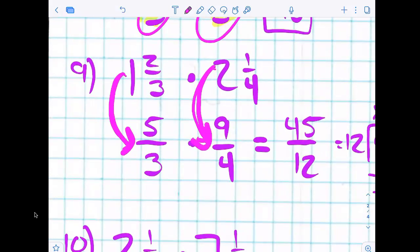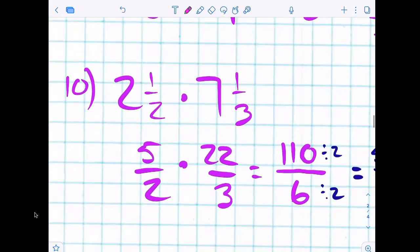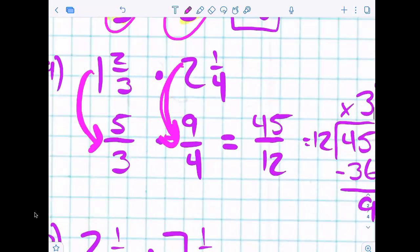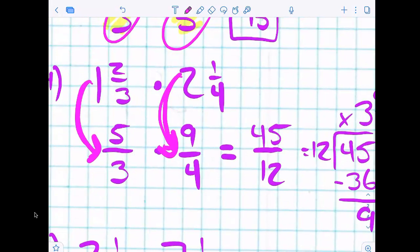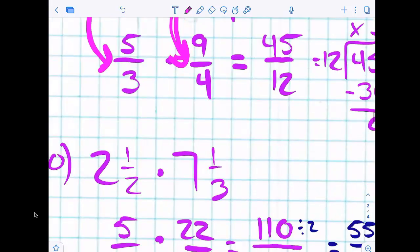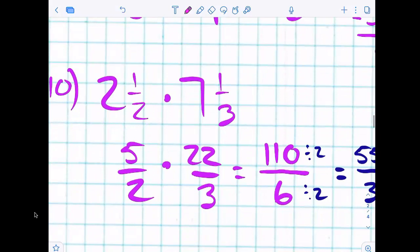So around the world would be another way of saying it. But we didn't reduce anything. We converted to a mixed number. Same thing for... I'm sorry, we converted to an improper fraction. Now you got me all messed up. We converted to an improper fraction, right? How about number 10? Did we convert to an improper fraction? Yes.